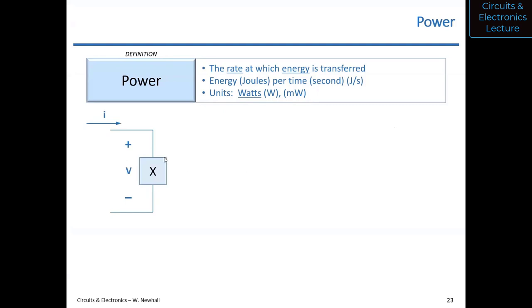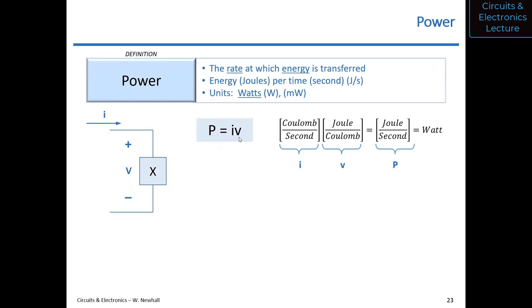Let's suppose we have a circuit element X — it doesn't matter what it is. It could be a resistor, a light bulb, a battery, a solar panel, an electric motor. We define voltage across the circuit element between those two terminals, and current into the circuit element. Power is defined as I times V — current times voltage. You can see that from the units: coulombs per second times joules per coulomb gives you joules per second, which is a watt. So P equals I times V.